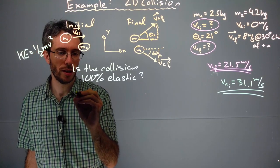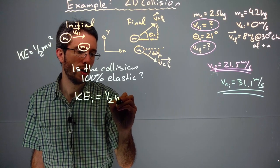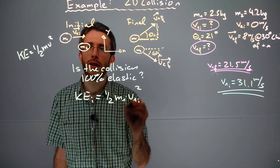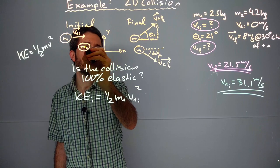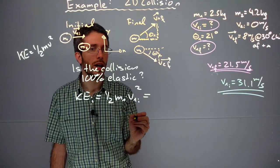My kinetic energy initial is 1/2 m1 times v1 initial squared plus 1/2 m2 v2 initial squared. v2 was zero, so that's all the energy we have, which gives me around 1,210 joules.